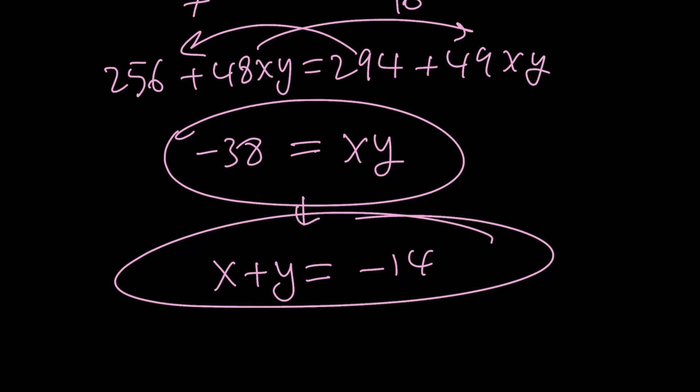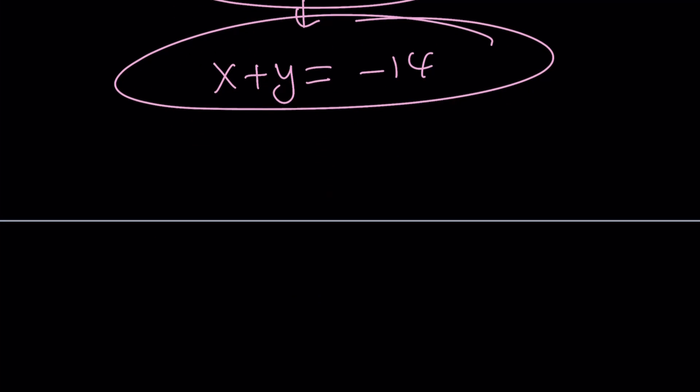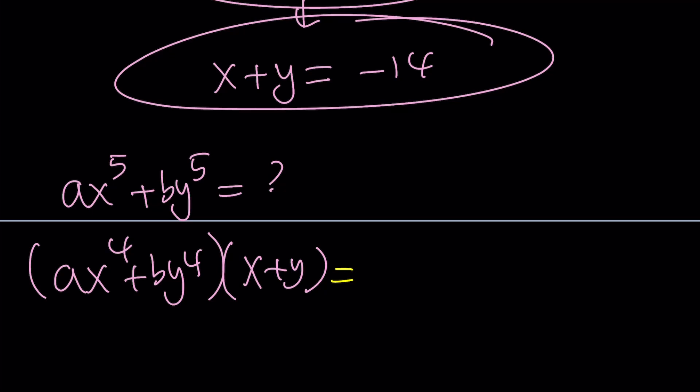So, we've got those two values. What can I do with them? Do we have to solve for x and y? No. Because they're asking for, or the problem is asking for, ax to the 5th plus by to the 5th, right? To get that, you take ax to the 4th plus by to the 4th and multiply by x plus y. Just like before, same pattern applies. So, we can keep going.